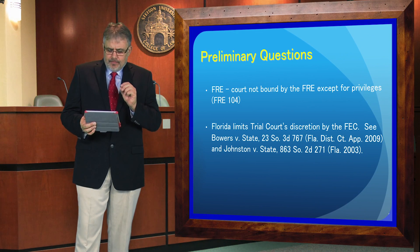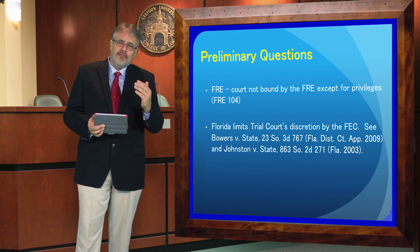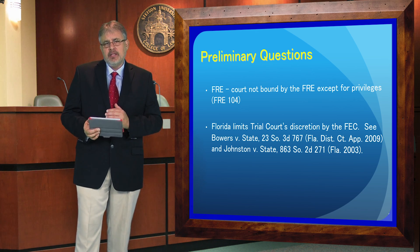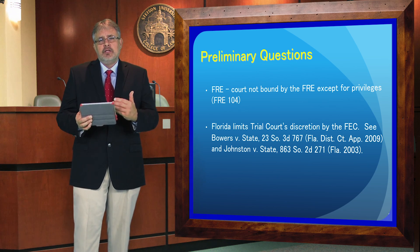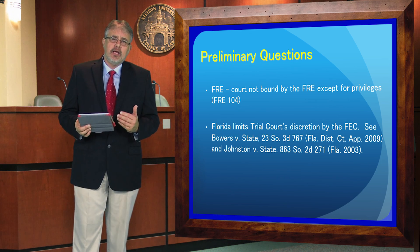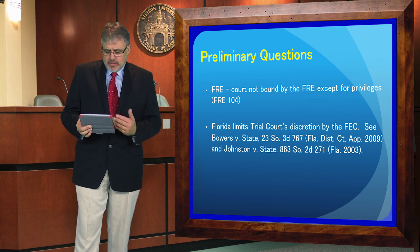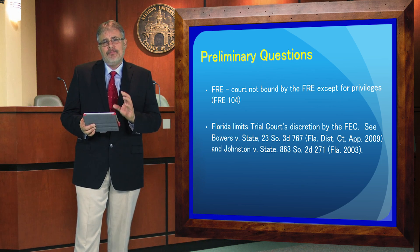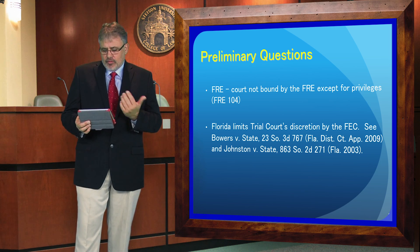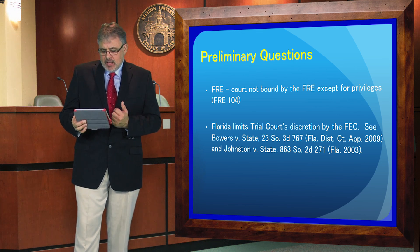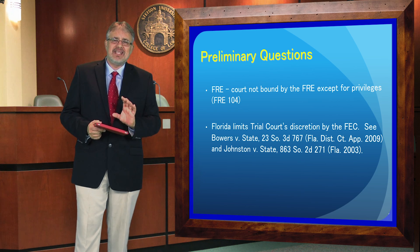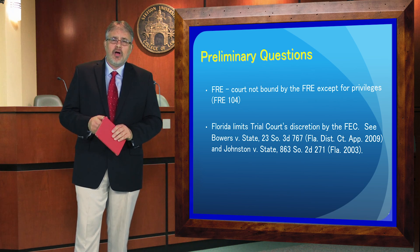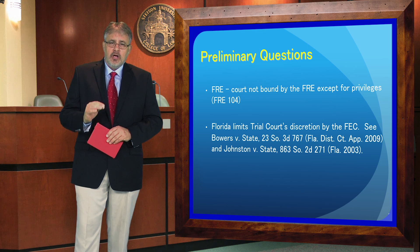Looking at the slide, you can see how in the federal rules of evidence, Rule 104 is bound by privilege. A judge cannot pierce privilege — whether it's attorney-client, priest-penitent, or the like — to make a determination of the admissibility of other evidence. Florida, on the other hand, has some specific cases that limit the trial court's jurisdiction in that regard. Bowers v. State and Johnson v. State are both good cases to take a look at to make certain you've properly got a sense of how far the power of the trial judge goes when determining the admissibility of evidence under a Rule 104 standard.